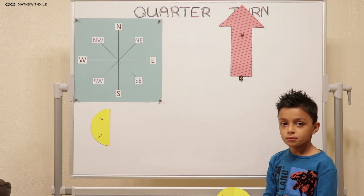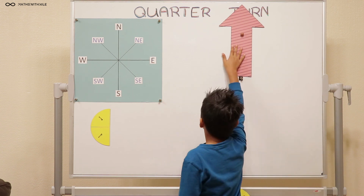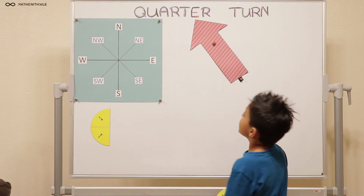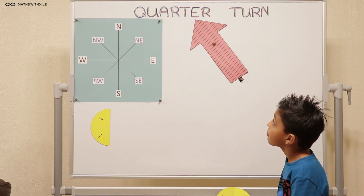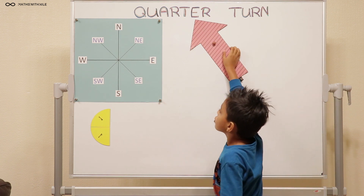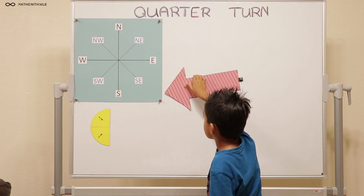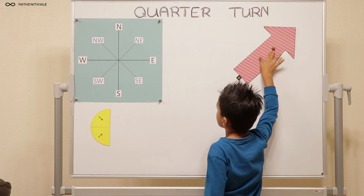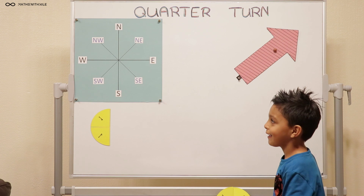Excellent Niall. Can you put the arrow facing north-west? North-west. About here? Yeah, about there. Looks good. And what if you move the arrow a quarter turn clockwise? Quarter turn clockwise. That's not clockwise — quarter turn clockwise. And now it's pointing to north-east. Very good Niall. Almost. It looks good.